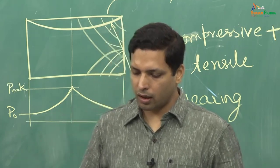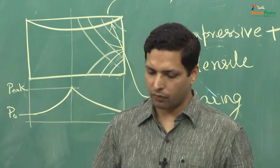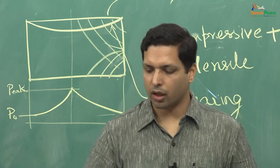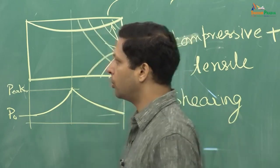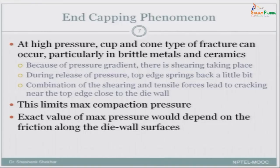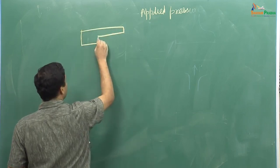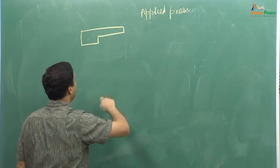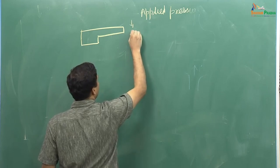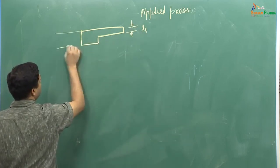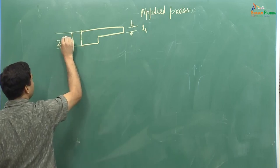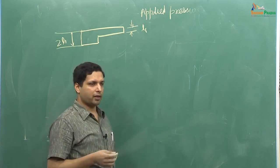Now, there is one more small bit of information we should look at before we move on from powder compaction, and that is about tooling. So far we have assumed a simple two-dimensional shape. Now let us say the shape is not two-dimensional and has what is called two levels. Let us say this is a two-level shape because it has two levels.